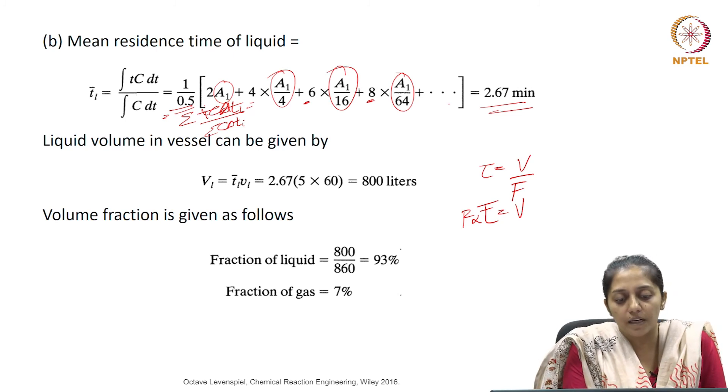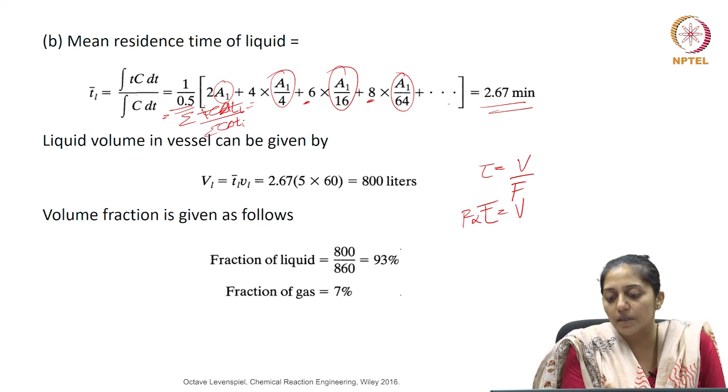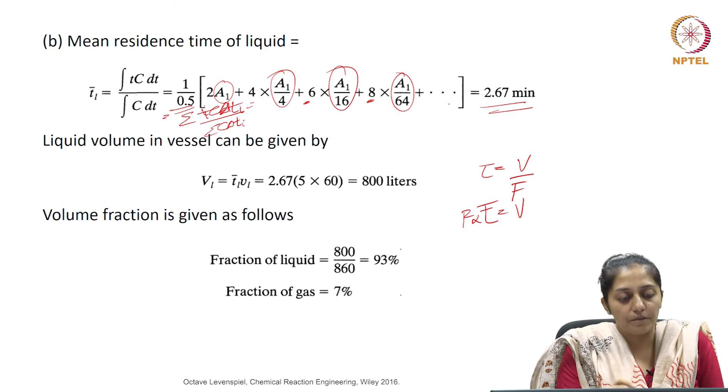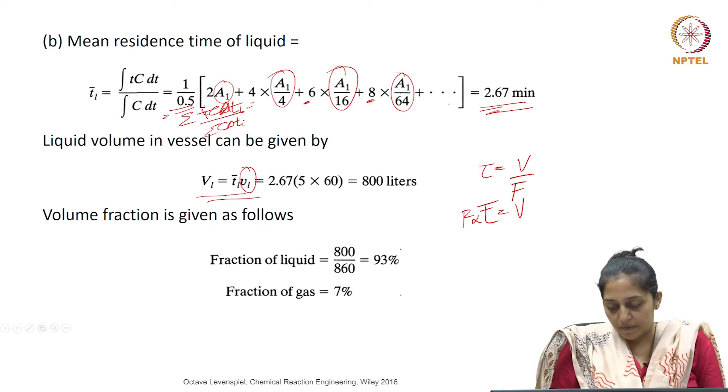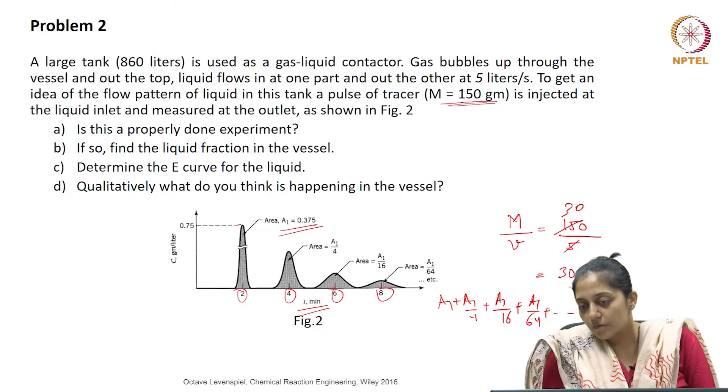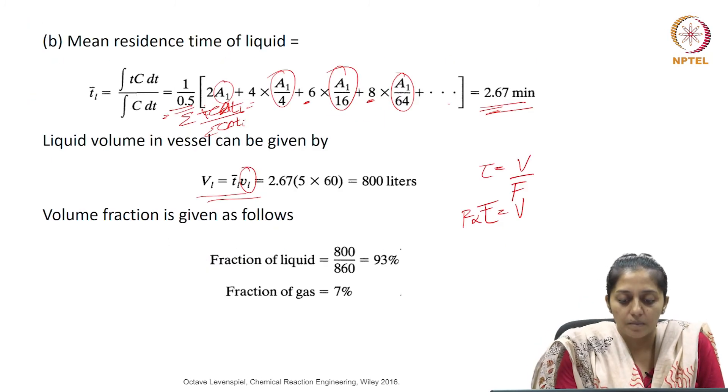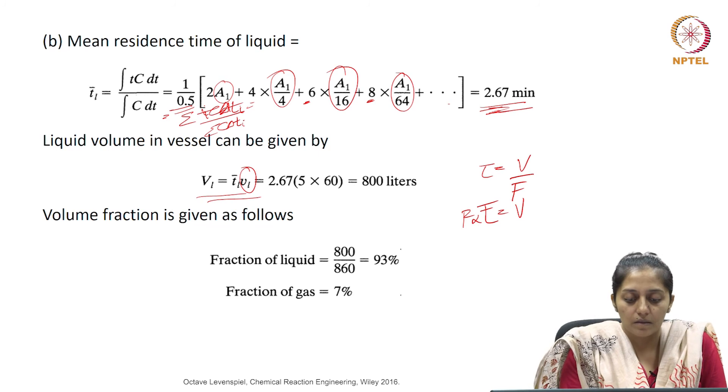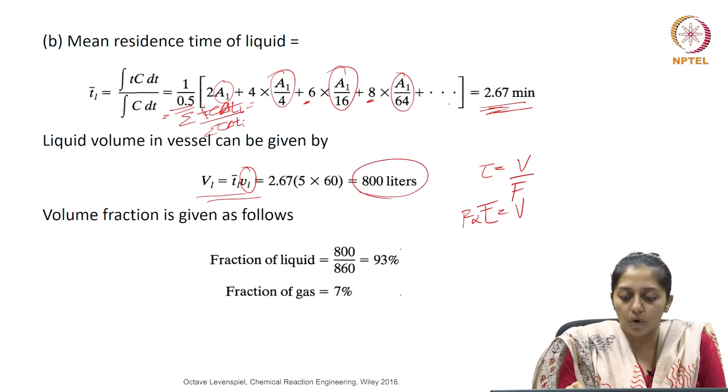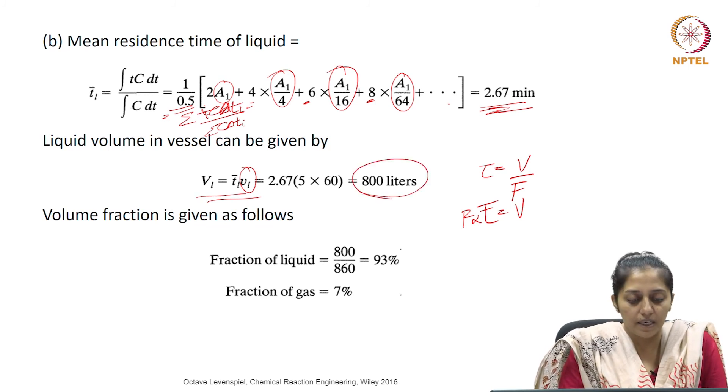For that you take 2A1 common here and it will get converted to a Taylor series. Once we know this mean residence time, we can calculate the volume knowing the volumetric flow rate. Volumetric flow rate was given as 5 liters per second, converted to minutes because this is in minutes. Therefore, we get the total volume of the liquid which is 800 liters.